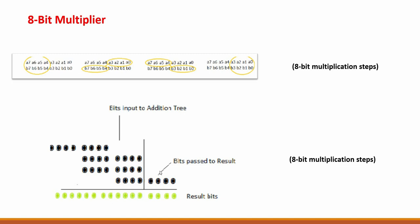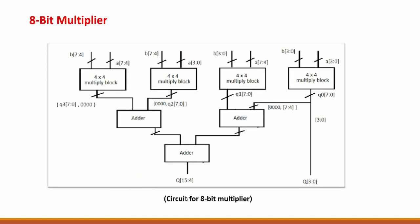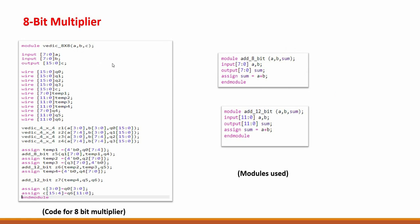Moving on to the addition tree — again this is the most important step. For Q0, the last 4 bits are passed directly to the final product. The first 4 bits of Q0 are added in the addition tree. The cross multiplication results are added as they are; the overlapping bits are added, and for the final step the last 4 bits are added to the addition tree while the first 4 bits are passed to the result. Finally, we get our 16-bit answer. Similar to the 4-bit multiplier, the 8-bit multiplier uses four 4-bit multiplier modules, zeros are padded wherever required, the respective adders are used, and we get the final answer.